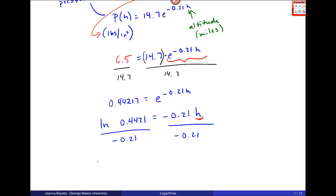Really what I'm going to plug into my calculator is this: natural log of 6.5 over 14.7, all over this, to make sure I don't get rounding error. So natural log of 6.5 over 14.7 - and in my calculator I put this in parentheses - and then divide it by negative 0.21. And I get h is 3.89.